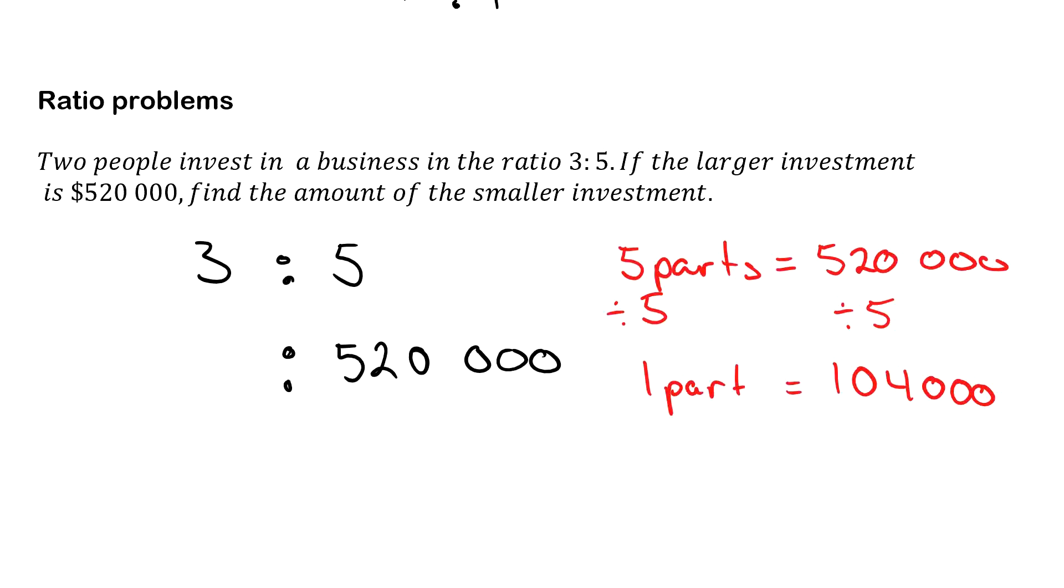The problem is we need 3 parts. So I can go back over here and go times 3, times 3. So I get 3 parts is now going to be equal to $312,000. So over here now, 3 parts is $312,000.